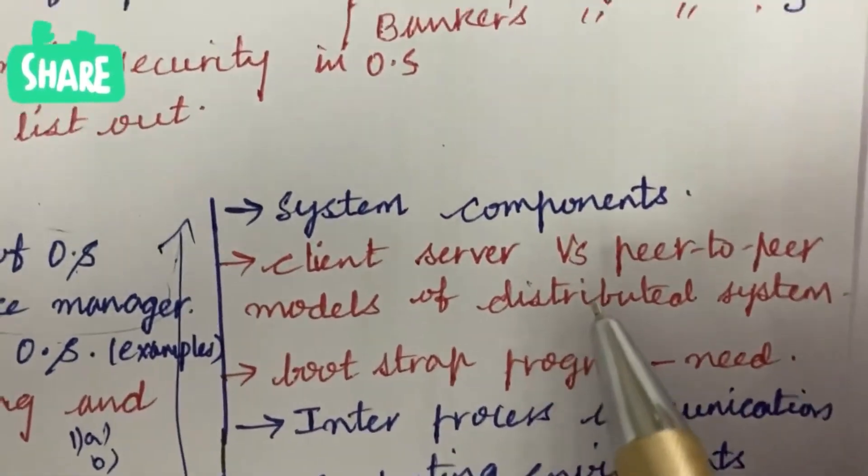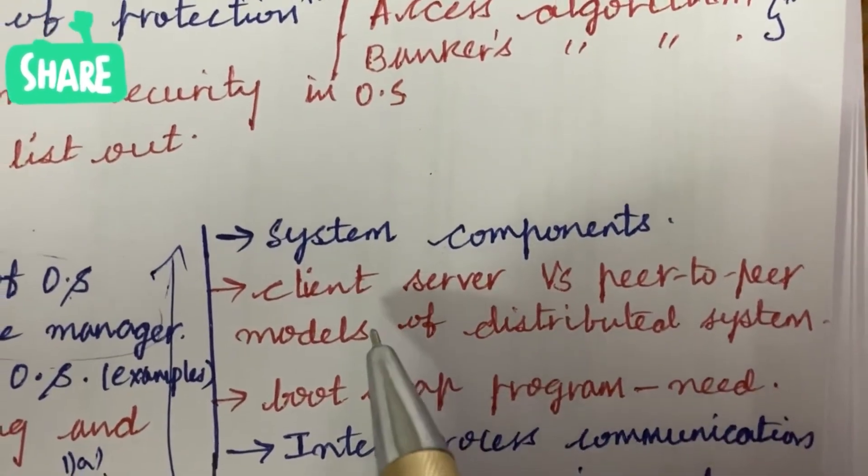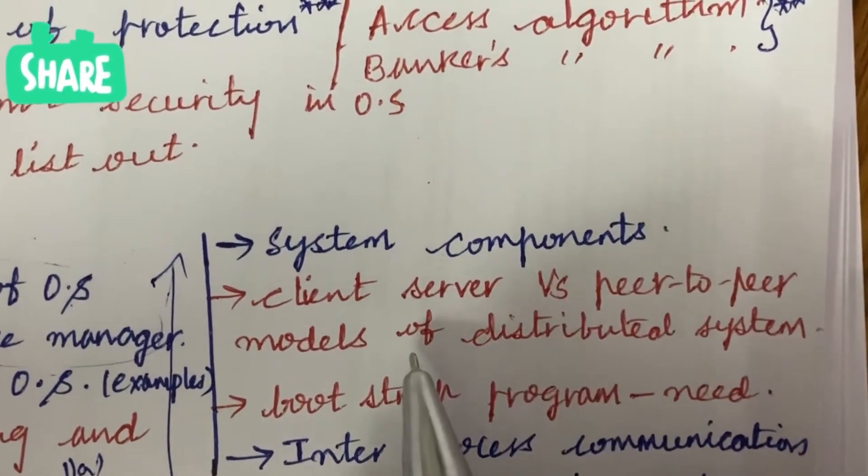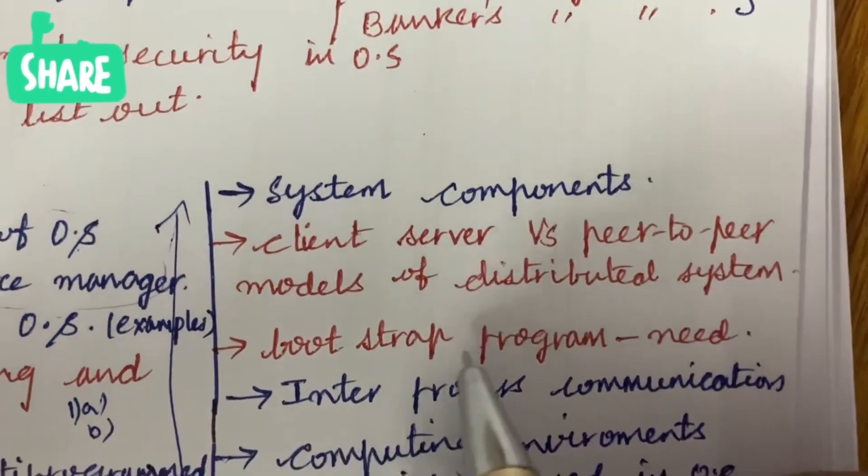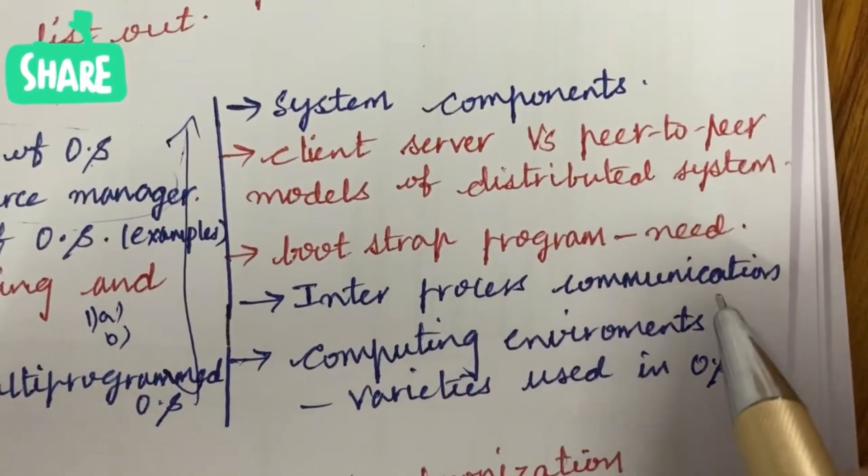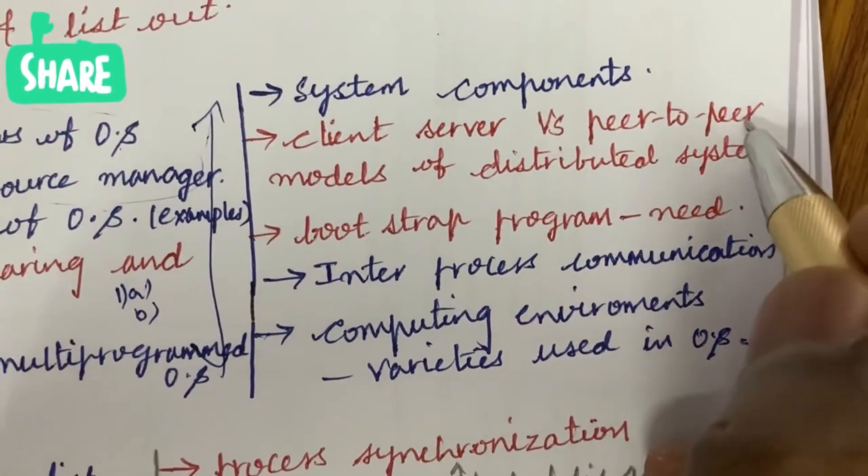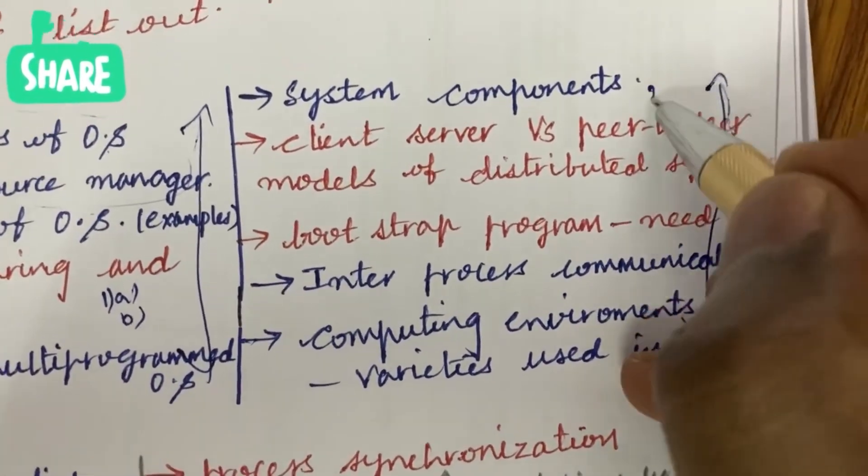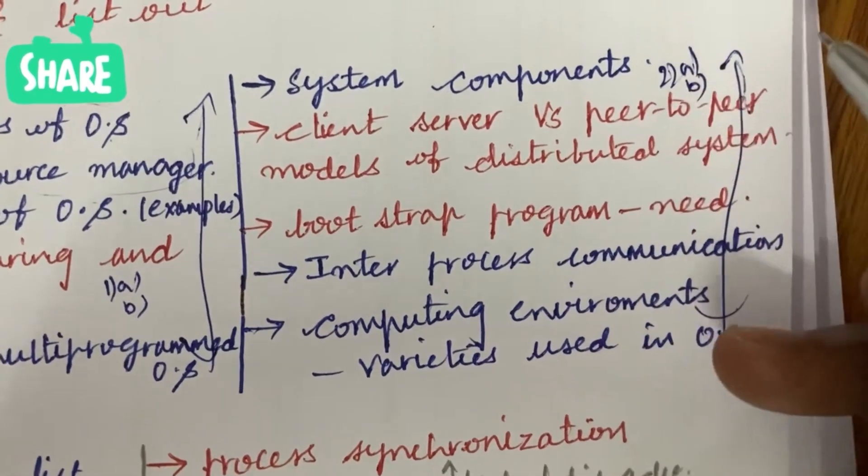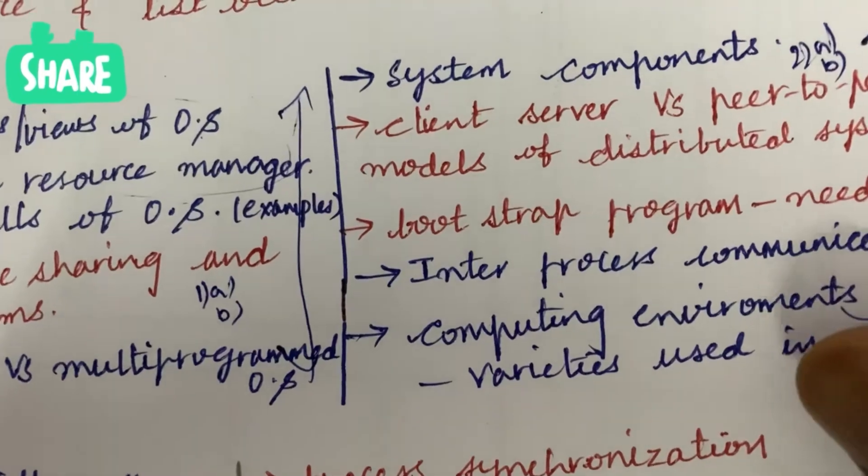Define the system components and list out them, as well as the differences between client-server and peer-to-peer models of distributed system. Bootstrap program and its need, as well as inter-process communication and computing environment where a variety is used in operating system. From this part you can expect 2a as well as 2b. Please do work out all this concept to score out of out marks - 30 marks will be asked from this.